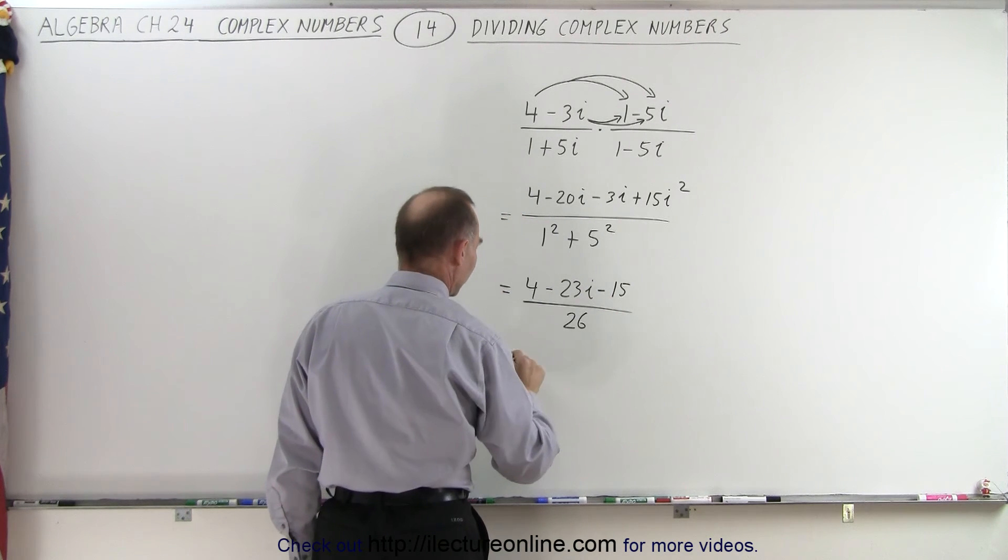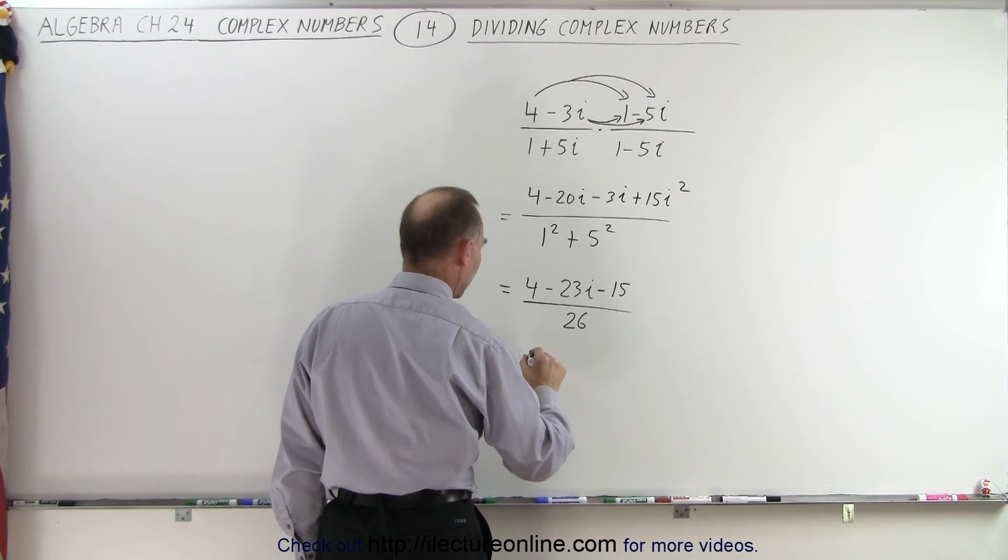And then we can combine the 4 and the minus 15. So this is equal to 4 minus 15, which is minus 11.